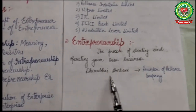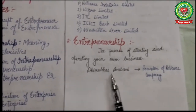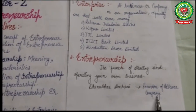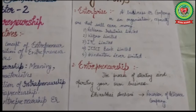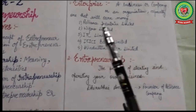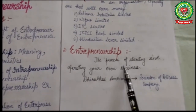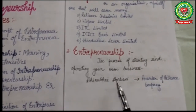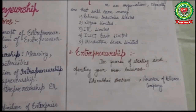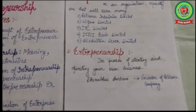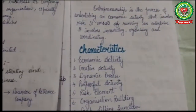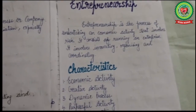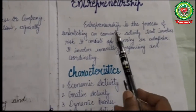The next key term is entrepreneurship. For example, Dhirubhai Ambani is called an entrepreneur who started the Reliance company, and Reliance company is known as an enterprise. Entrepreneurship is the process of starting and operating your own business, and that is why it is called entrepreneurship — it means a process.